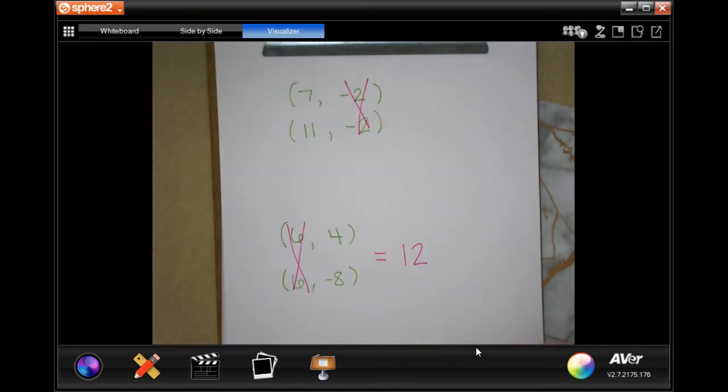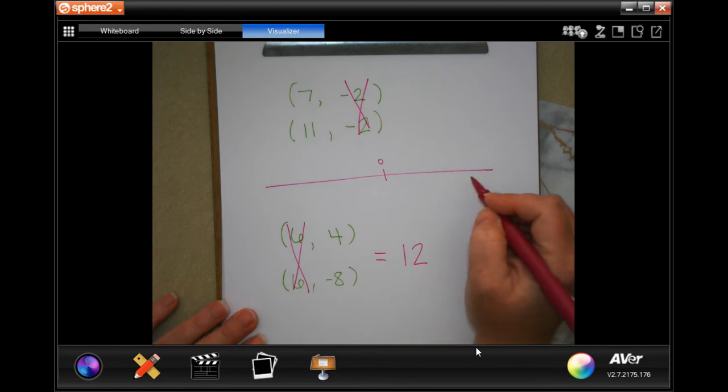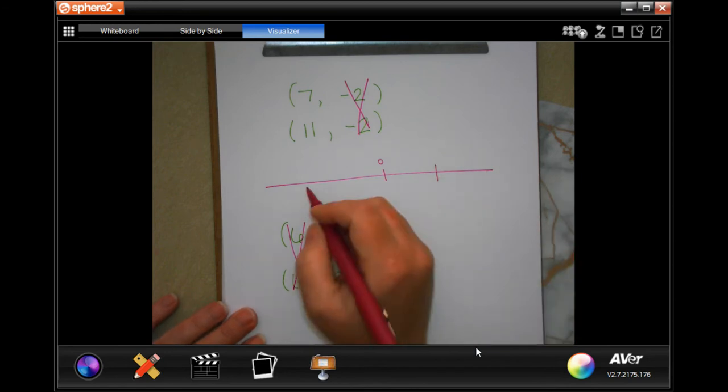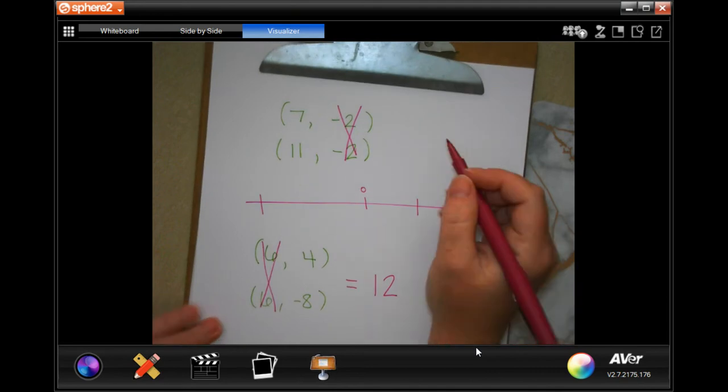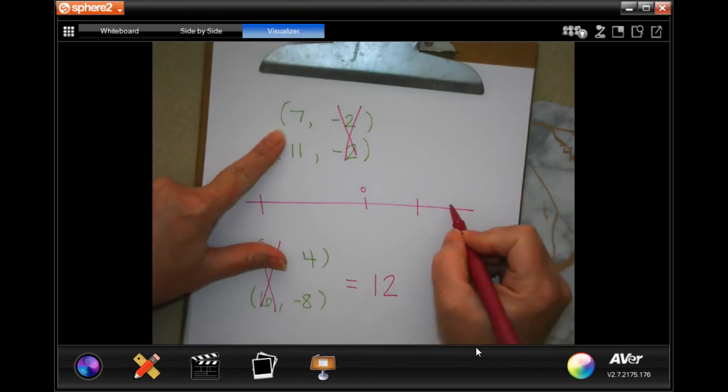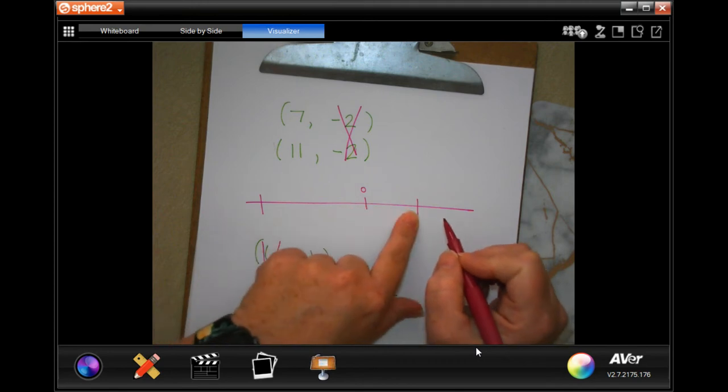Let me show you what I mean. If that's zero, then four is over here and negative eight is over here. Now if I'm looking for seven and eleven, that's like right here and right here. If I'm looking for negative eight and four, I have to go all the way back to zero and then to four.